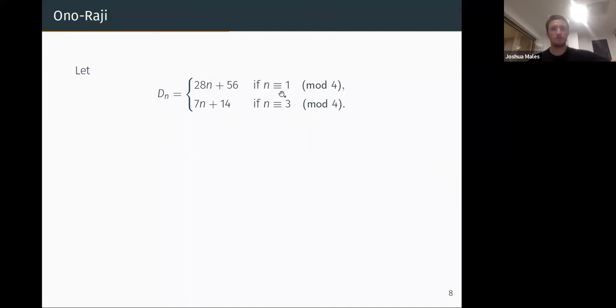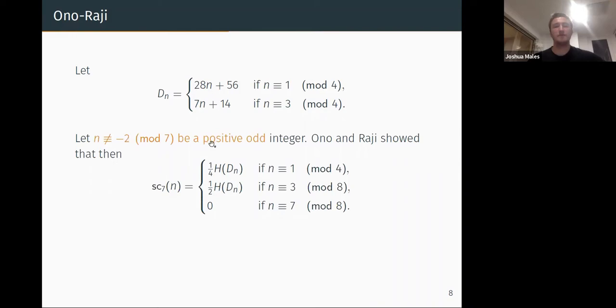Next was Ono-Raji. So this is very recent. I think last year, even. And we need a bit more notation. We need some number D sub m, which just depends on m congruent to 1 or 3 mod 4. And you'll see here, this basically comes directly from Gauss's class number formula. It's just a factor for this difference. What did they show? They showed that if n is not 5 mod 7 and it's positive and odd, then the self-conjugate 7-cores are also class numbers, depending on n mod 4 or 8.